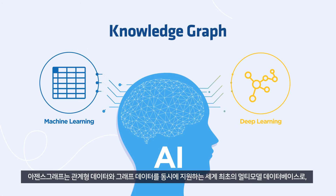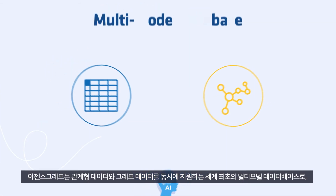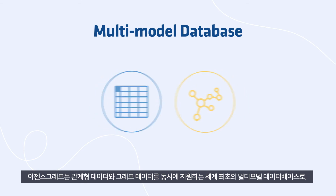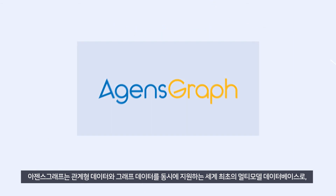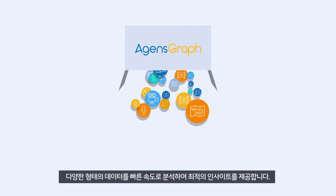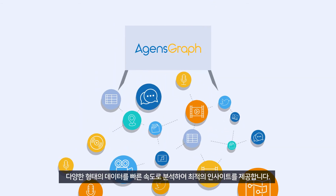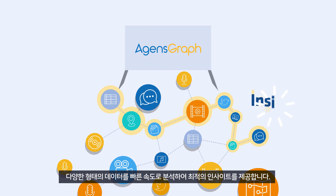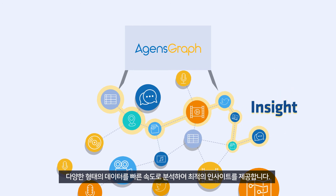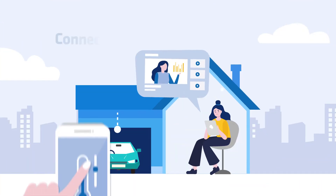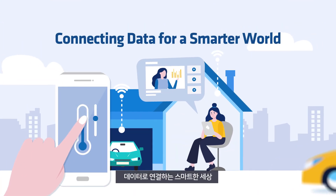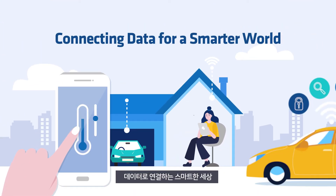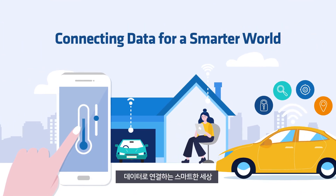Agenz Graph is the world's first multi-model database supporting both the relational and graph data. It quickly analyzes different types of data and provides optimized insights. Connecting data for a smarter world.